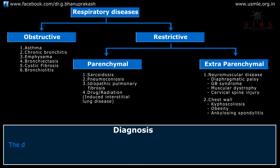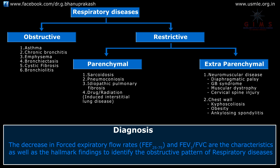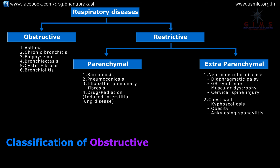A decreased forced expiratory flow rate — FEF 25 to 75 — and a decreased FEV1 to FVC ratio are the characteristic hallmark findings used to identify the obstructive pattern of respiratory diseases. By this, we have classified respiratory diseases into obstructive and restrictive types.